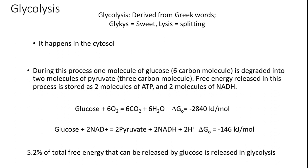That 5.2% is significant energy — enough to run some important tissues in the body. Some tissues survive largely on glycolysis, like the brain. Let's now see the various steps involved in glycolysis. Glycolysis contains 10 different biochemical steps.